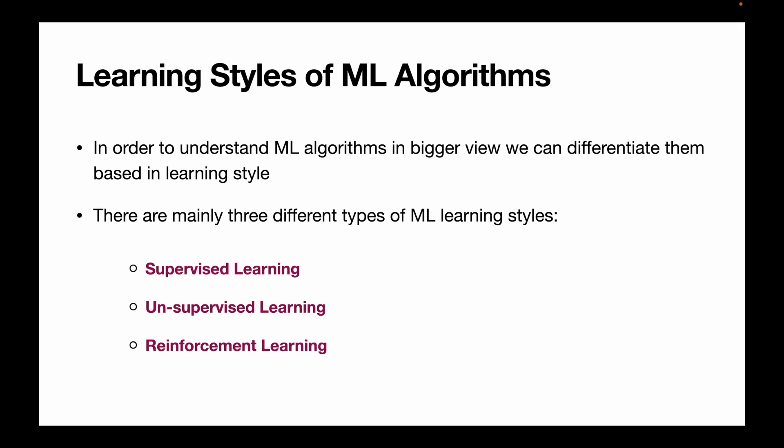Learning styles of ML algorithms. There are different types of machine learning algorithms — linear regression, logistic regression, K-means, K-nearest neighbor, K-modes, and many more. But to view the bigger picture, we understand them by their learning styles. There are three main types: supervised learning, unsupervised learning, and reinforcement learning. There is also a fourth one — semi-supervised learning — which I'll cover in a future video.